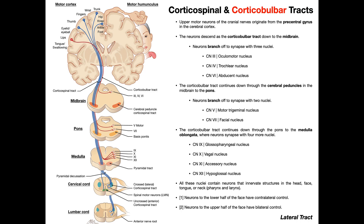In the previous video we talked about the corticospinal tracts and saw that these are a two-neuron system of upper motor neurons and lower motor neurons that ultimately control skeletal muscles in general at the level of the neck and everything else below — trunk, arms, hips, legs, abdomen, back, all that stuff.